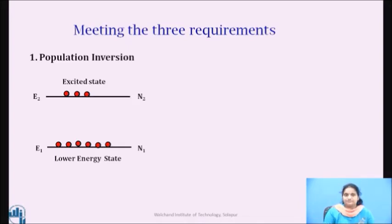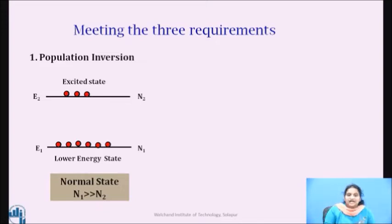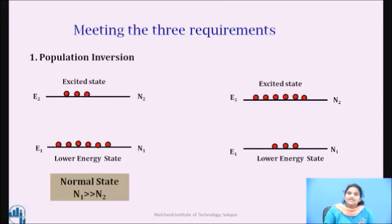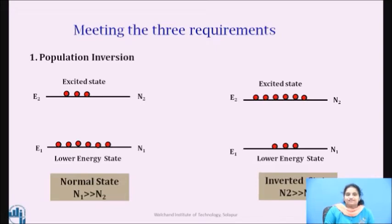Under thermal equilibrium, N1 is far greater than N2. To achieve the first condition, more number of atoms must be present in the excited state. Hence, population inversion — a non-equilibrium state — is created and exists for a short time, making N2 far greater than N1. In this condition, the population distribution between levels E1 and E2 is inverted, and hence it is known as the inverted state.